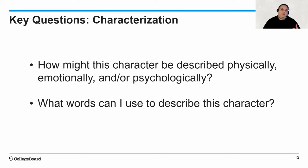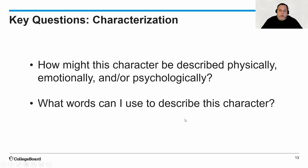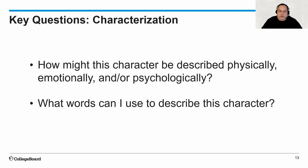Ultimately, we want to walk away with a series of questions to ask ourselves whenever we encounter a text and are asked to characterize a character in a short story or longer fiction. The two questions I want to leave you with are: How might this character be described physically, emotionally, and/or psychologically? And to answer that, we go to the second question: What words can I use to describe this character? That's when we return to our list of adjectives. If you're watching video one right now, keep that list with you and build upon it throughout the year — eventually it'll be a great tool to return to. I hope you found this conversation on characterization useful, and I want to see you for the next video where we'll apply what we've talked about to literature.